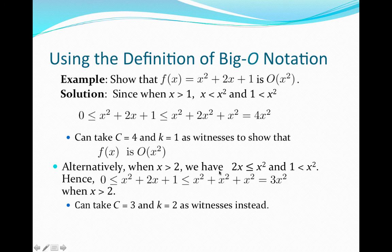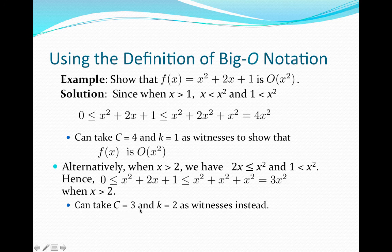Moreover, if x is greater than 2, we still know that 1 is less than x squared. Since x is greater than 2, our f of x is going to be positive, so we don't need to worry about taking the absolute value. Using these inequalities, x squared is less than or equal to x squared; 2x is less than or equal to x squared; and 1 is less than or equal to x squared. So combining the coefficients, our function f of x is less than or equal to 3x squared when x is greater than 2. Therefore, c equal to 3 and k equal to 2 are also witnesses that f of x is big O of x squared.